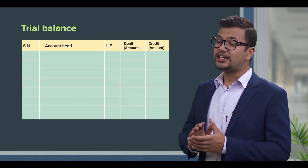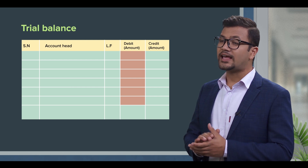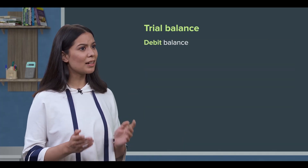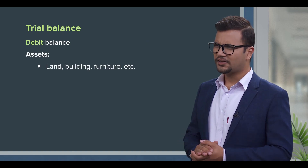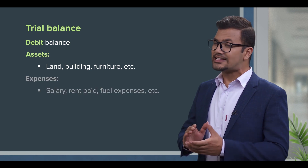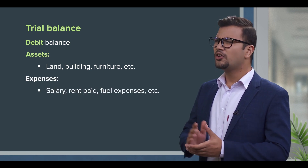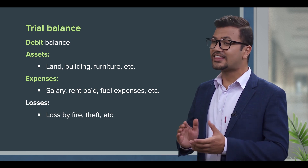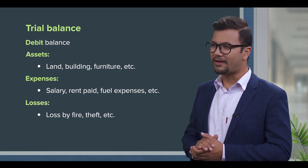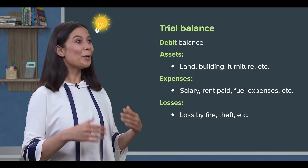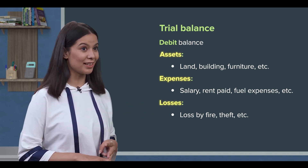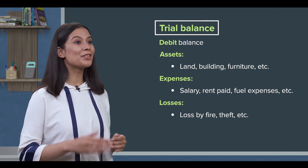Trial Balance records items with a debit balance. The items recorded on the debit side include: land, building, furniture, assets, salary, rent paid, fuel expenses, other expenses, and loss by fire or theft. So, all assets, expenses, and losses are recorded with a debit balance.